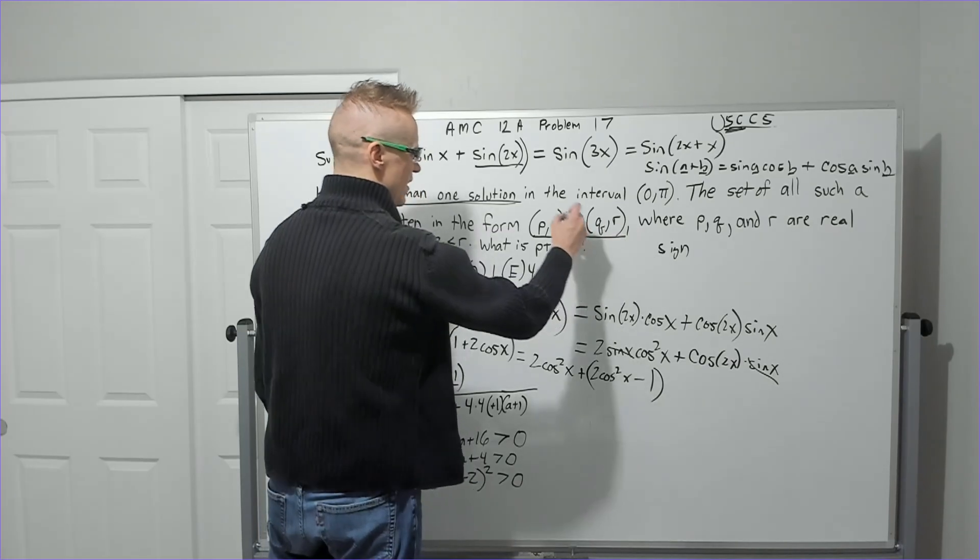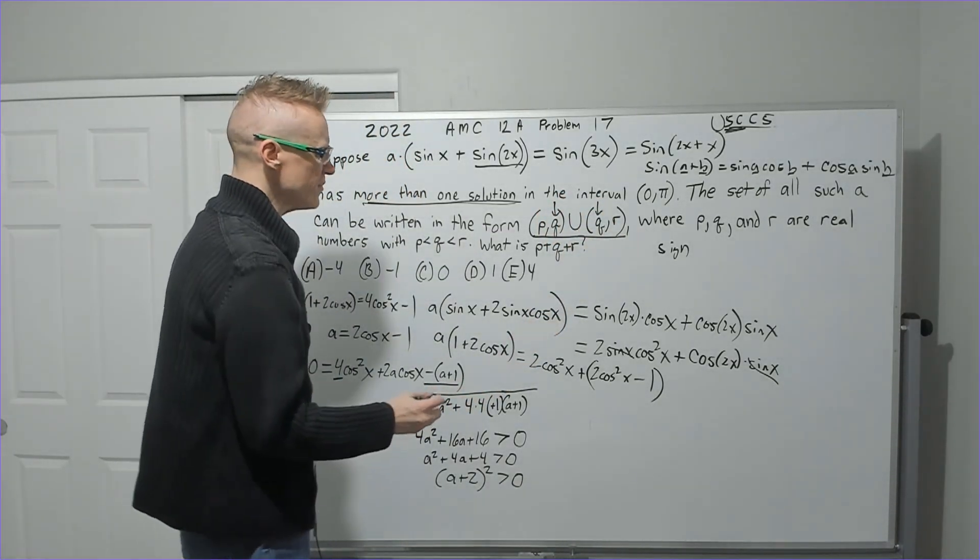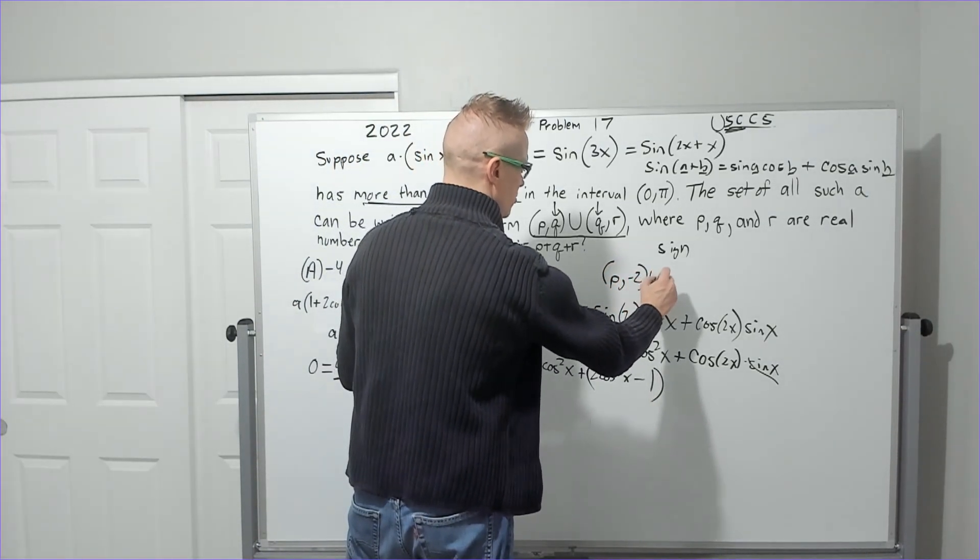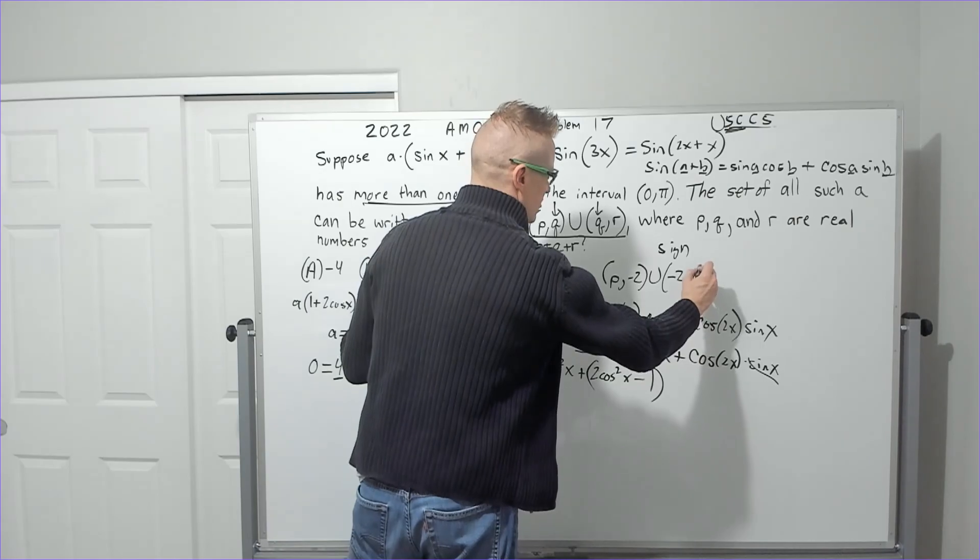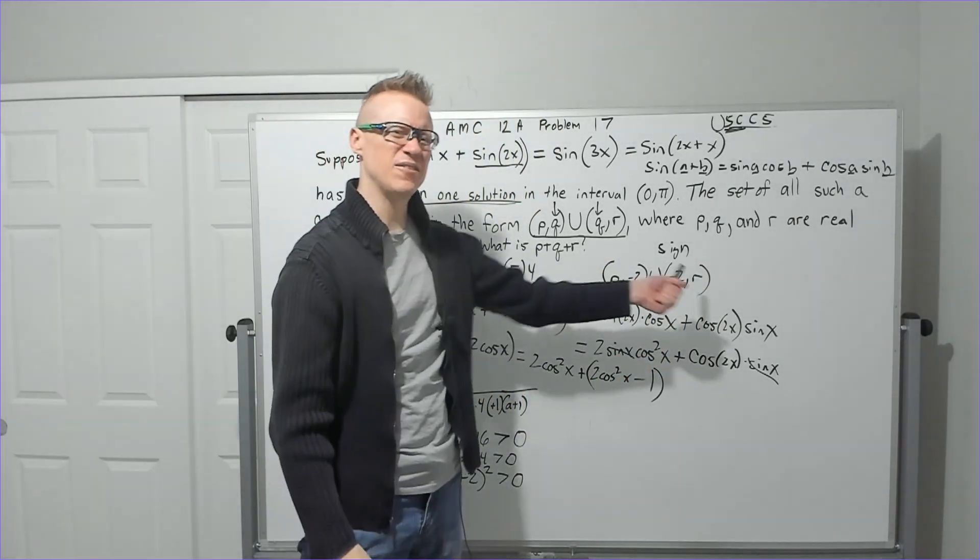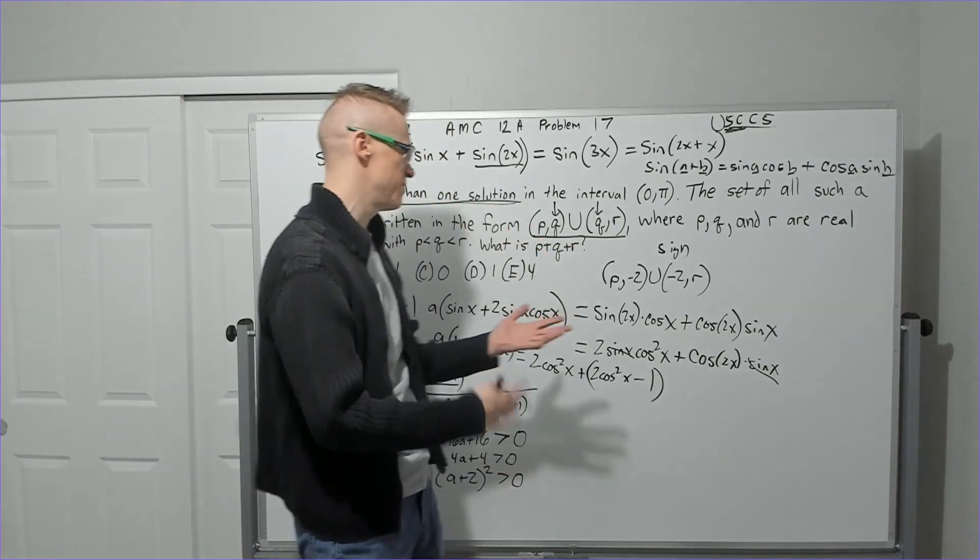So then a cannot equal negative 2. Let's look up here. That must be this q value in the middle. So you're going to have something from p to negative 2 union negative 2 to r. Okay. Now we just got to get the left and right. We hope. We think that's what we need, right? We're looking for some confirmation maybe.